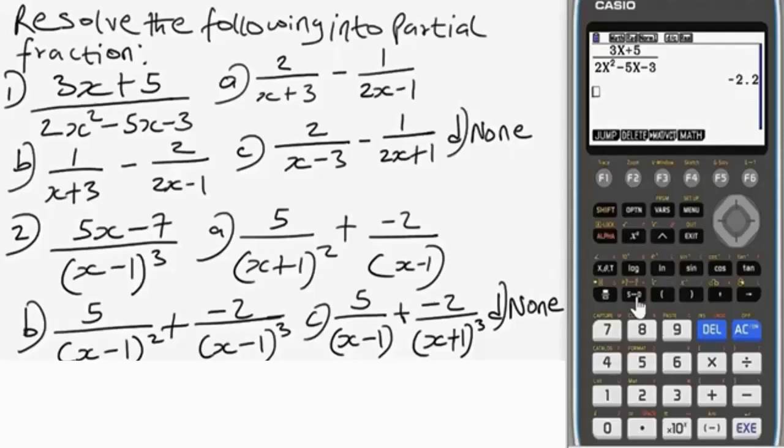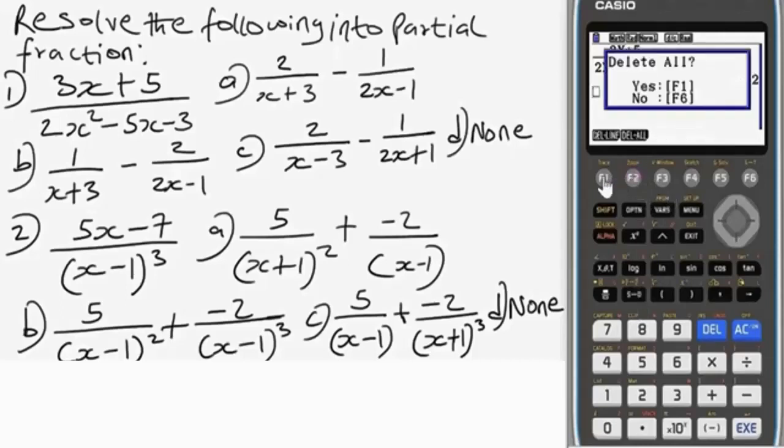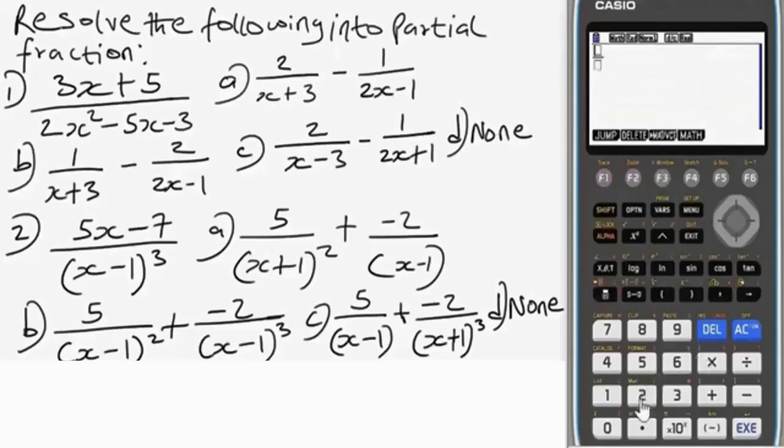I'm going to simplify the options. Anyone that gives us -2.2 or -11 over 5 will be our answer. It's as simple as that. Let's delete everything here. Let's view option A. We have 2 over (x alpha x) plus 3, then go to this side, you have minus, minus 1 over 2x (alpha x) minus 1. That's all. Let's press equal.